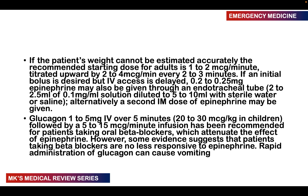In some patients, you do give glucagon: 1 to 5 milligrams IV over 5 minutes — that's about 20 to 30 micrograms per kg body weight in children — followed by 5 to 15 micrograms per minute infusion. This is needed for patients on beta blockers, because beta blockers attenuate the effect of epinephrine, and there is evidence that such patients may not be responsive to epinephrine. Remember to give glucagon slowly; if given too quickly it may cause the patient to vomit.